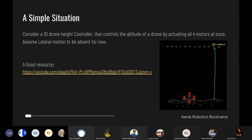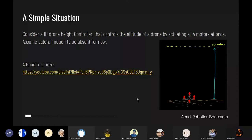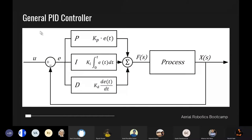We need some minimum thrust for the drone to hover, plus or minus additional thrust to rise or fall. The correct solution is to keep track of our past states — we need to store our past thrust values and use them in the controller. That is done using an integrator.